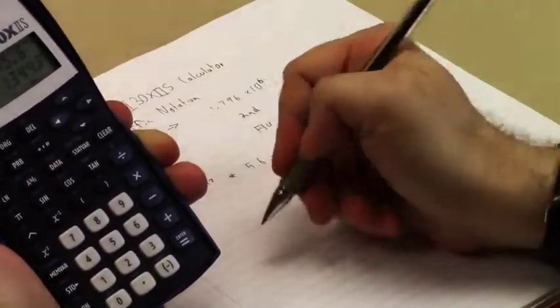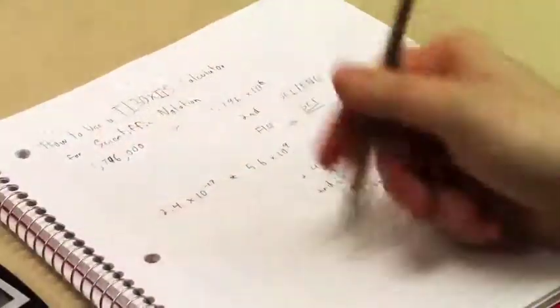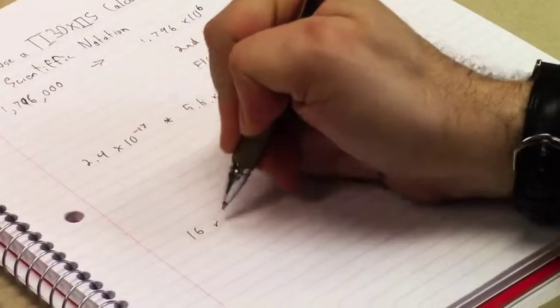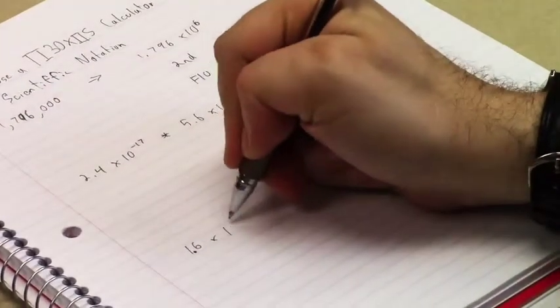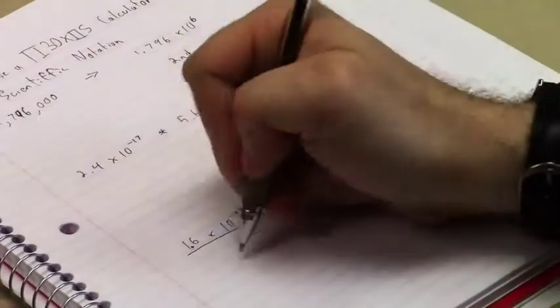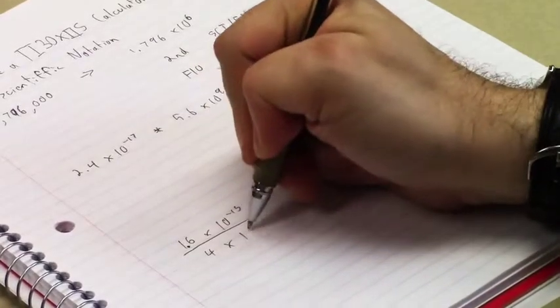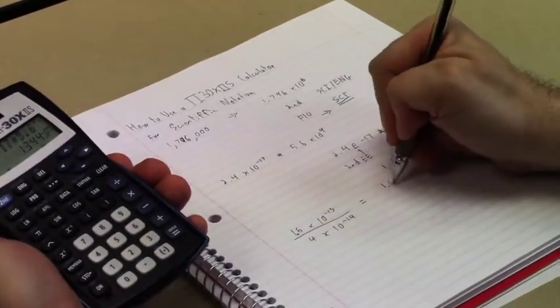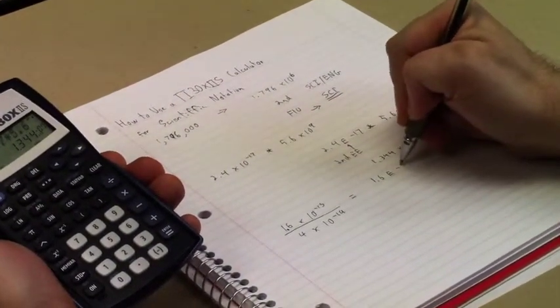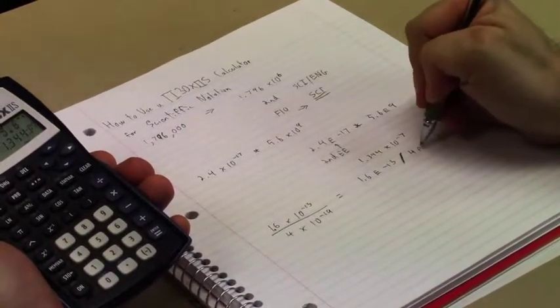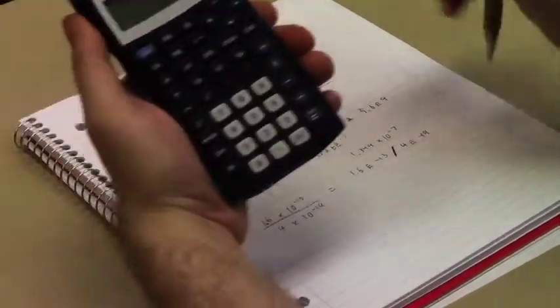We can also use this for division. So, let's suppose that the problem we want to solve is 1.6 times 10 to the negative 13th over 4 times 10 to the negative 19th. So, on the calculator...